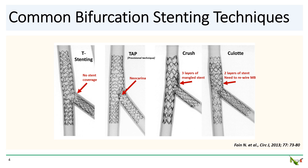I've included links to a couple of videos on TAP stenting in the comments section below. Crush is a very common technique with several different variations and is very well studied, but it does leave behind three layers of mangled stent material in the main branch, and rewiring and passing equipment into the side branch for kissing balloon angioplasty can be challenging, especially if the vessels are smaller. For these reasons, I'm not a very big fan of crush unless we're in the left main bifurcation or in larger vessels.